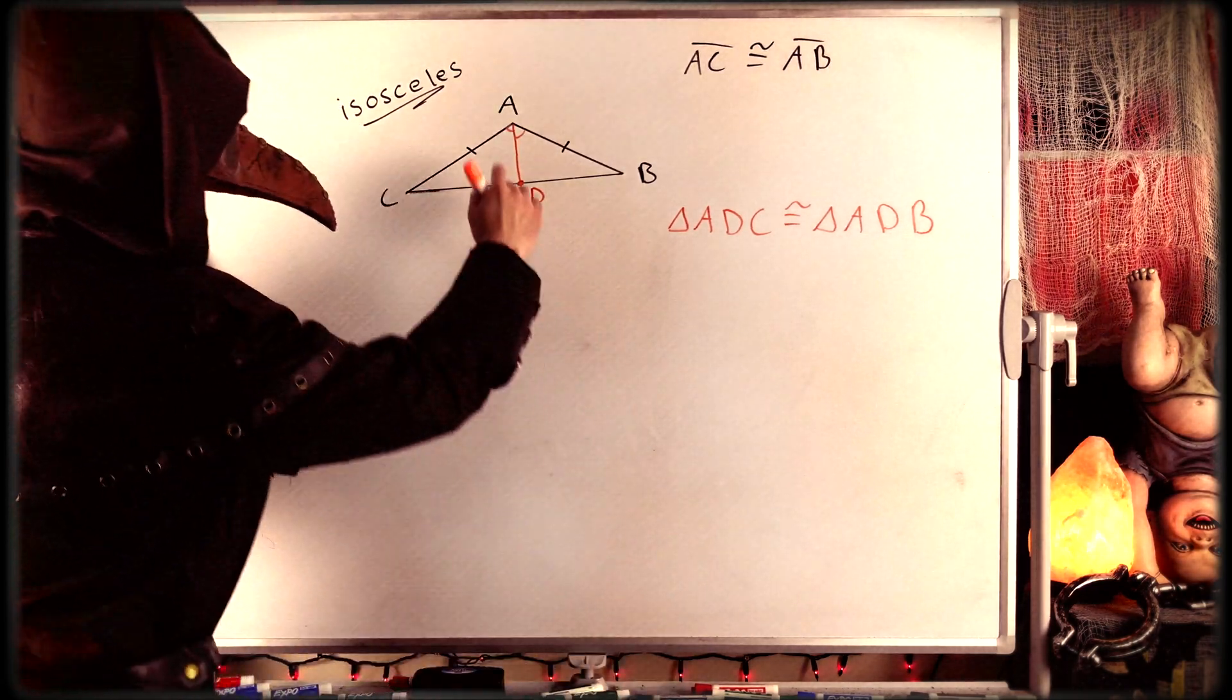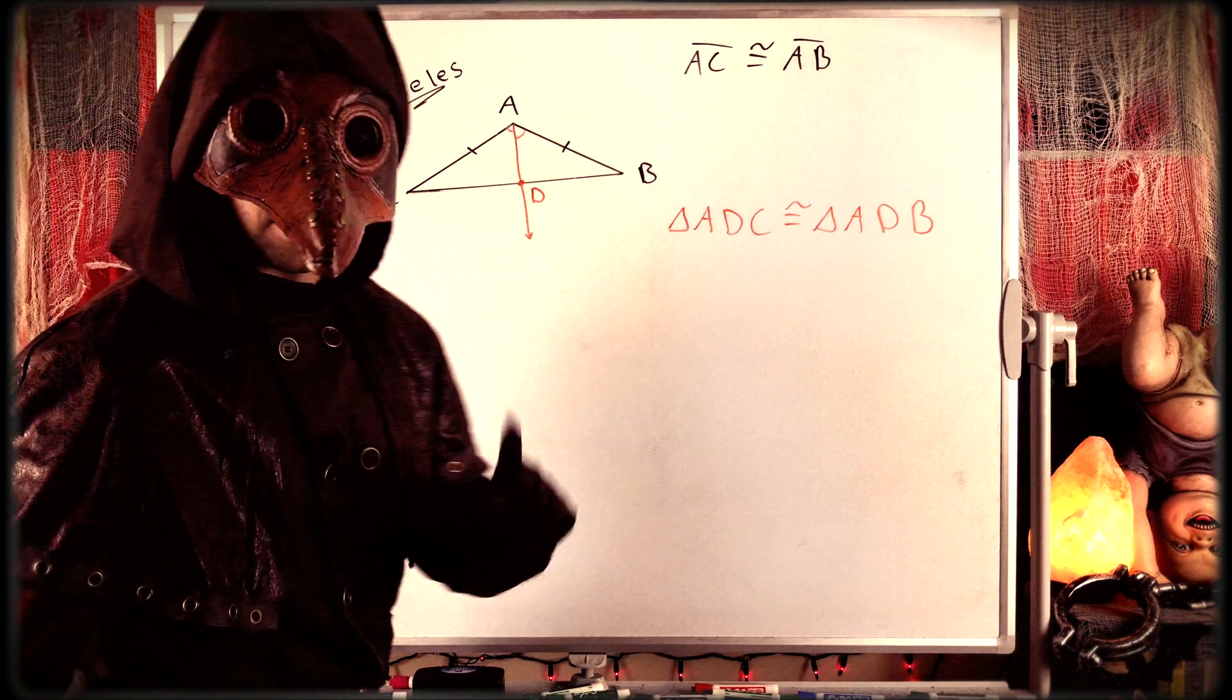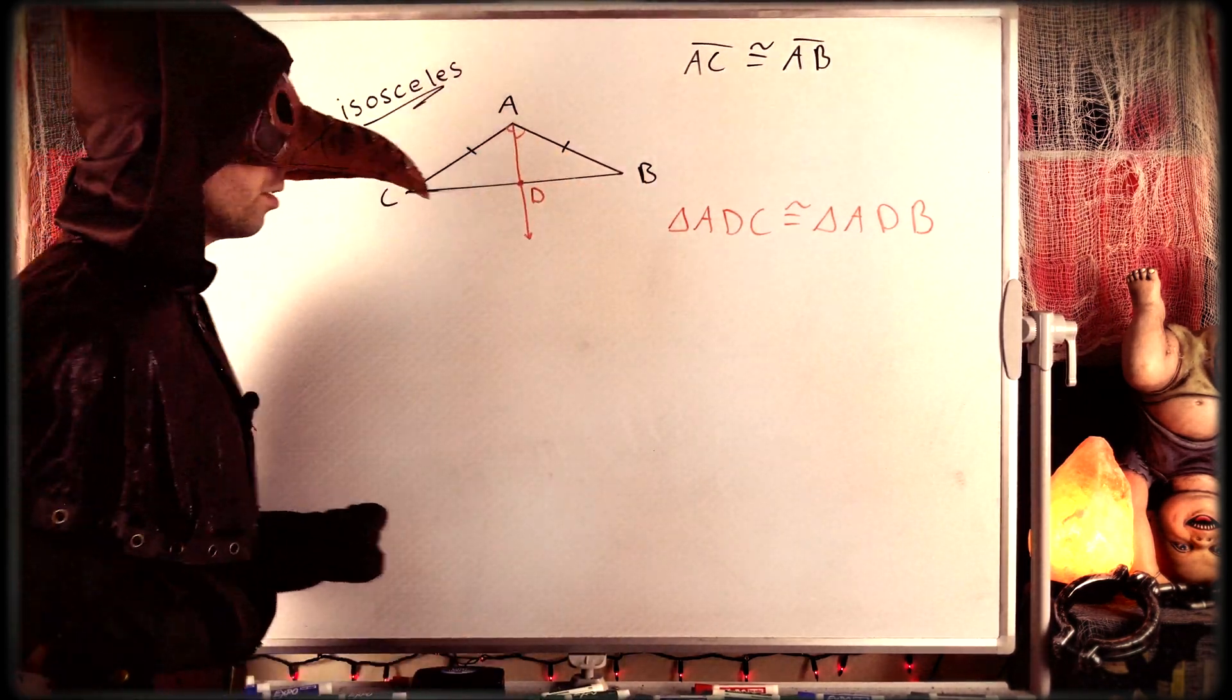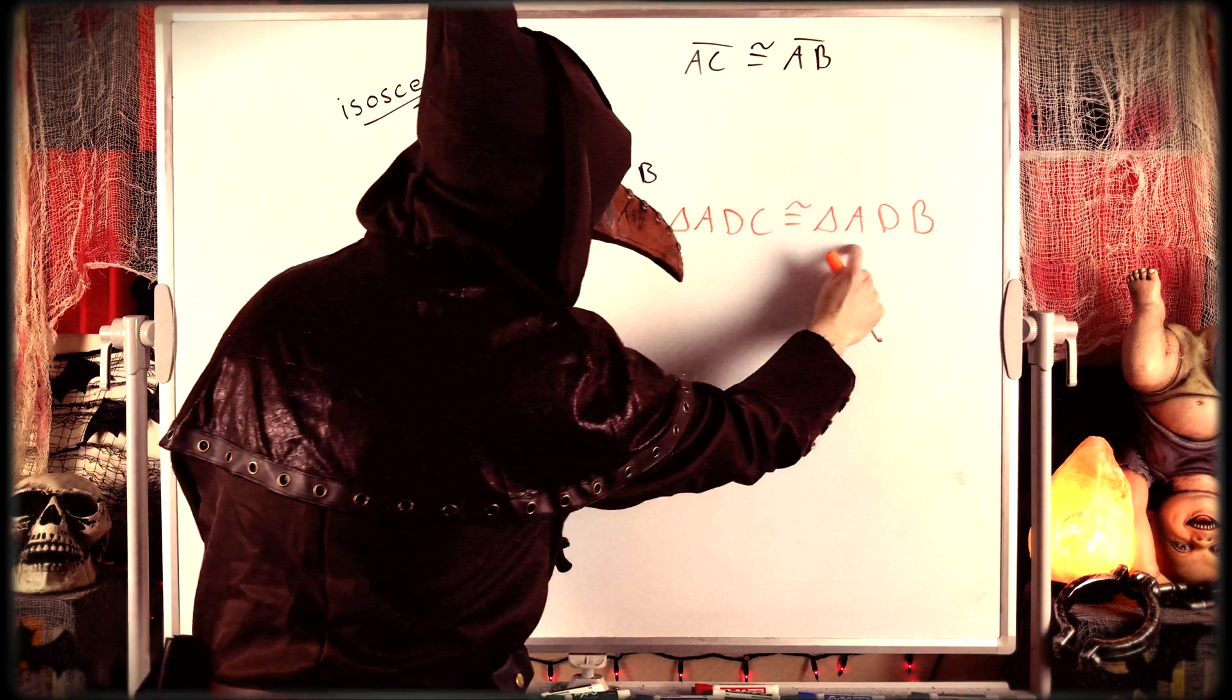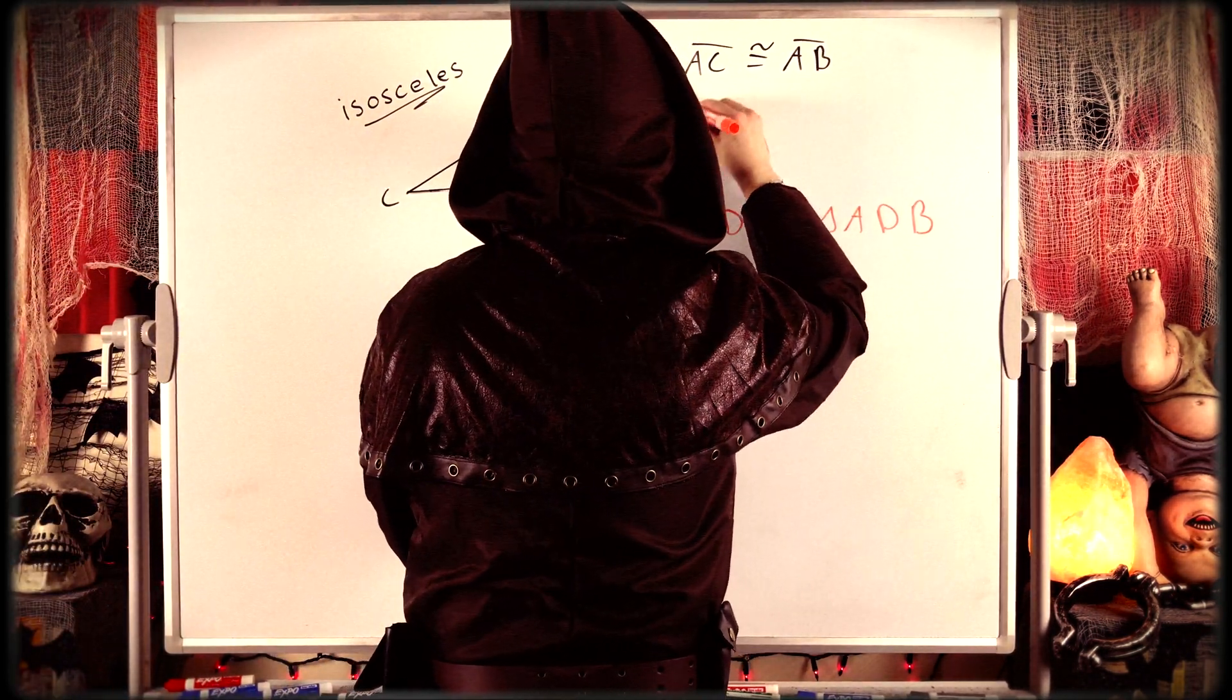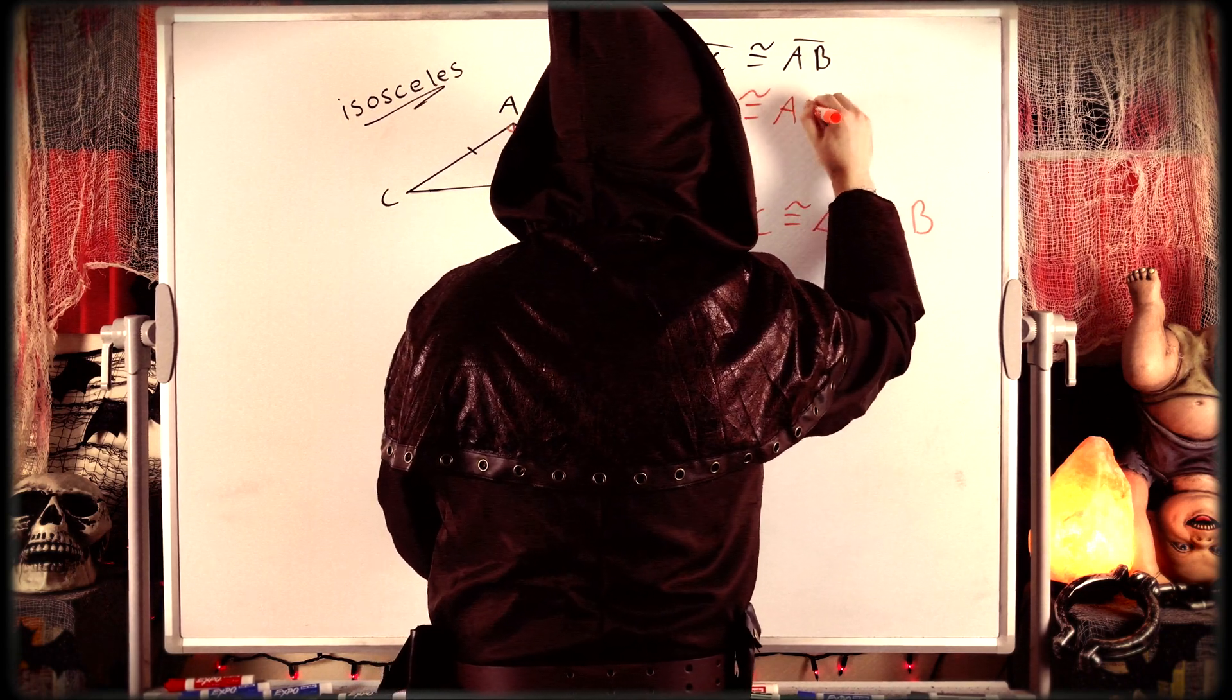Because look, side AC we already know is congruent to side AB, so there's one side down. Are there any other congruent sides between these two triangles? Well, yes. The side AD, that's a side of both triangles. And AD, of course, is congruent to itself, which we might decide to write AD is congruent to AD.